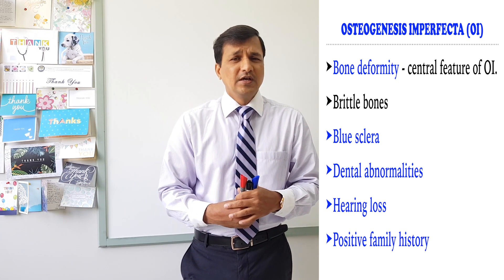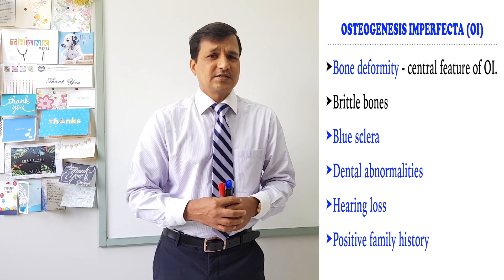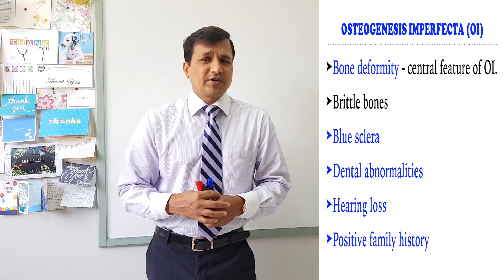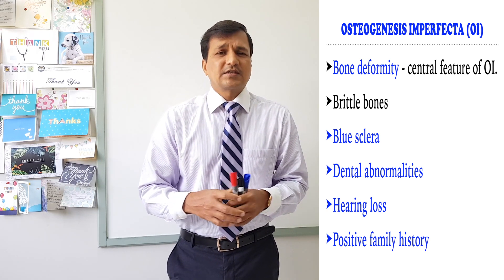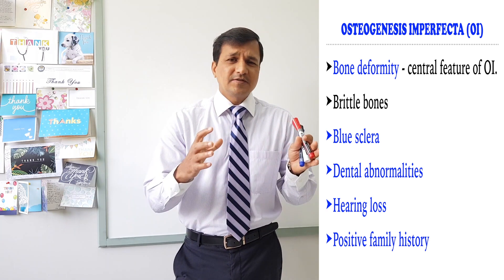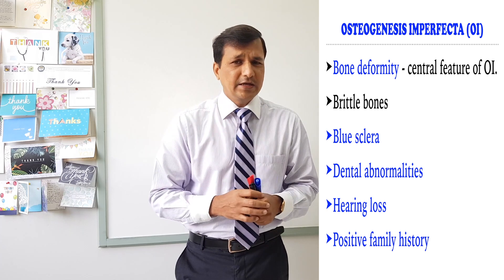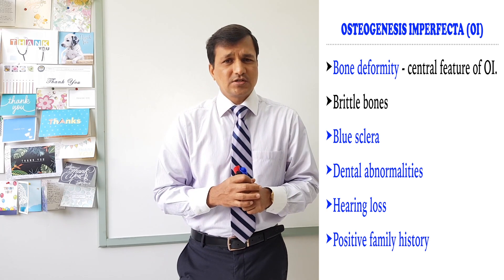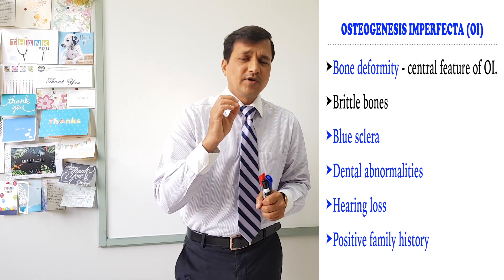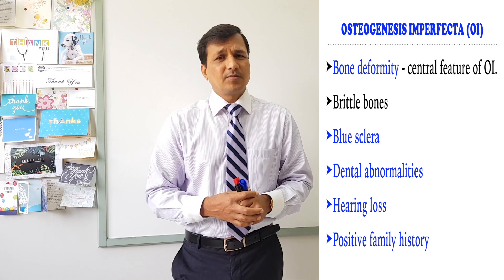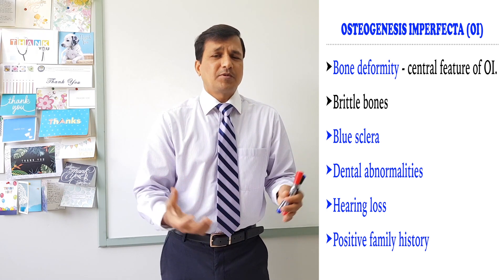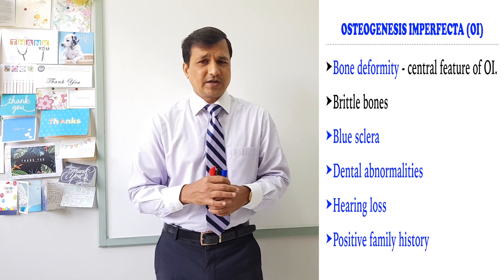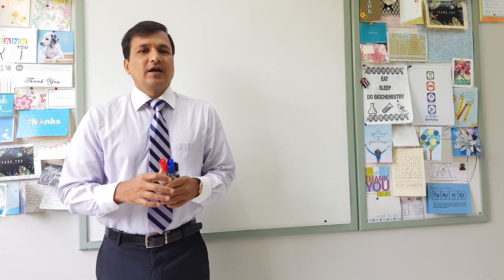Patients with osteogenesis imperfecta will also have hearing loss, seen in type 1 and other types. There is also a positive family history in osteogenesis imperfecta cases. To recap: bone deformity is the central feature, along with blue sclera, dental abnormalities (dentinogenesis imperfecta), hearing loss, and positive family history.